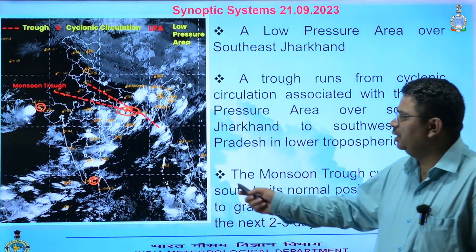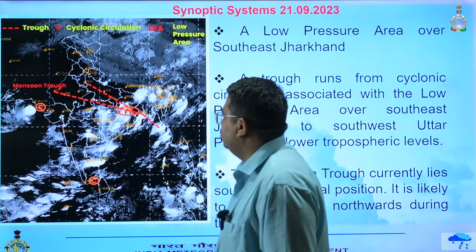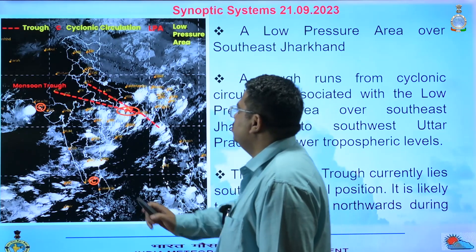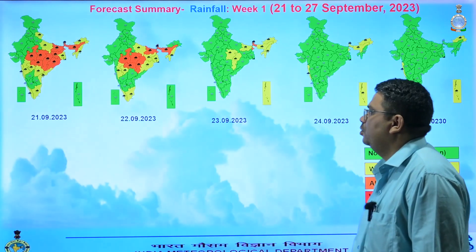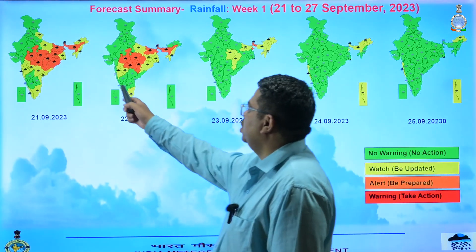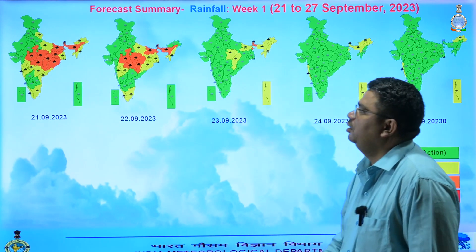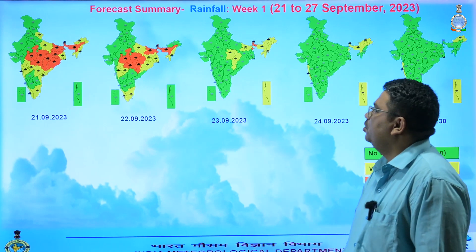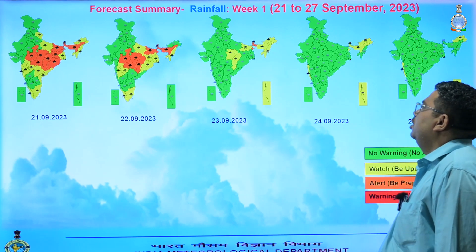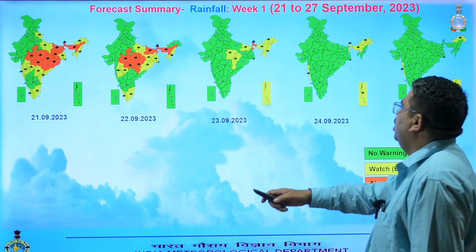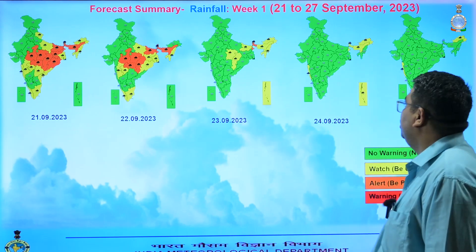Now these are the current synoptic systems. There is a low pressure area over southeast Jharkhand, and the monsoon trough runs south of its normal position. Under the influence of these systems, during the next two days, east and central parts of the country are likely to receive a good amount of rainfall with the possibility of heavy to very heavy rainfall. Thereafter, there is a possibility of reduction in rainfall from 23rd September. However, northeast India and Andaman and Nicobar Islands are likely to experience heavy rainfall activity.